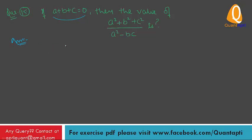To solve this type of question we have a short trick: if a plus b plus c is equal to 0, then we can consider a is equal to 1, b is equal to 1, and c is equal to minus 2.